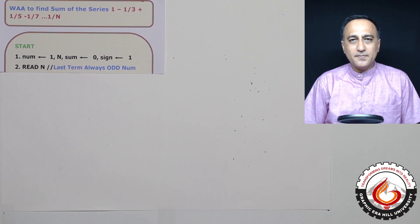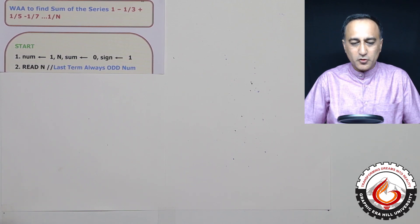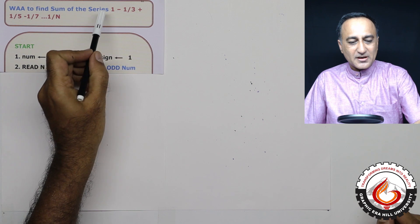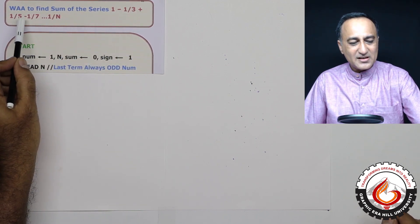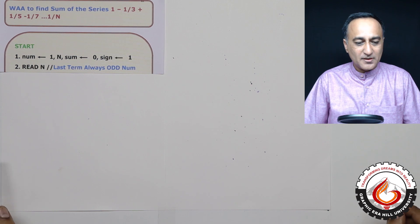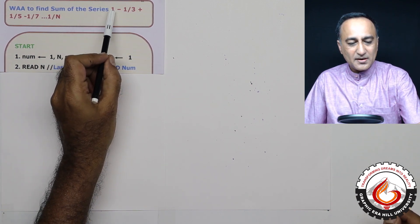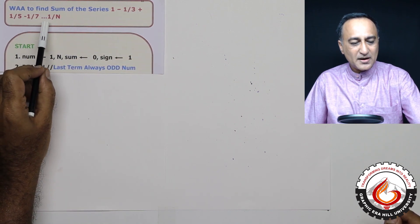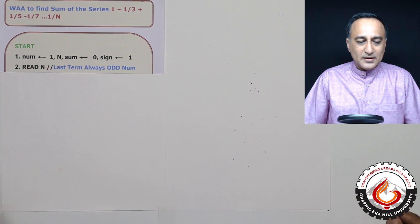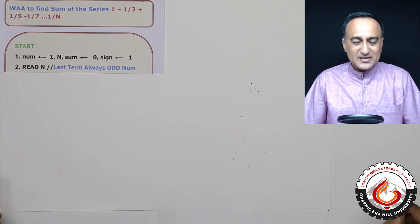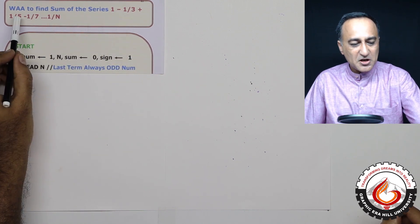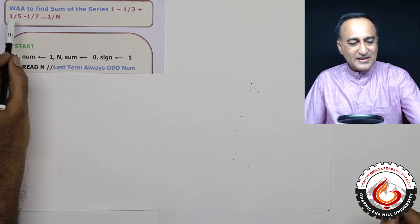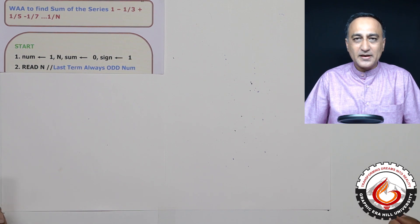We shall now look at an algorithm to find the sum of a series in which the terms have a change of sign in alternate positions. That means it is 1, then minus 1/3, plus 1/5, minus 1/7, plus 1/9, all the way up to 1/n. There is an interesting pattern: not only is the sign changing from plus to minus each time, but the denominator is also increasing by 2 every time.